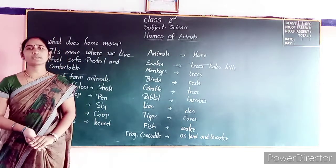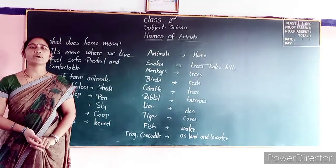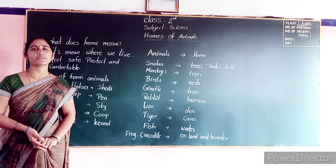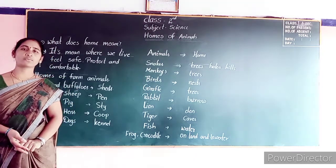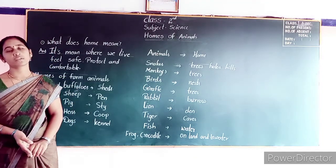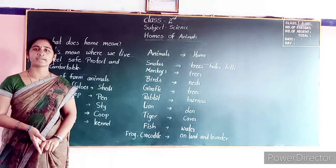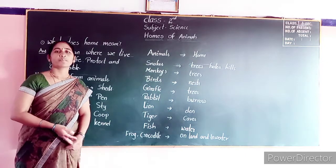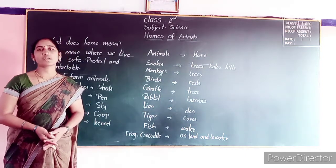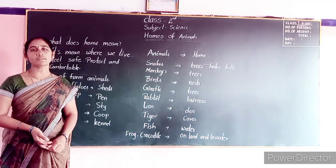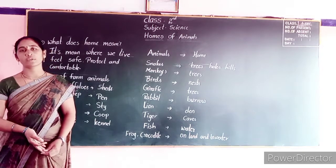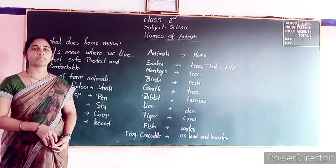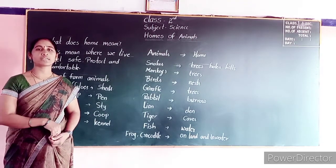Tell me children, what are the three basic needs of living? Very good — food, clothes and shelter. In the previous class you already learnt about clothes and food. Now we are going to learn about shelter.